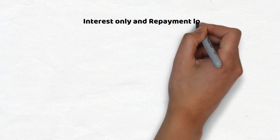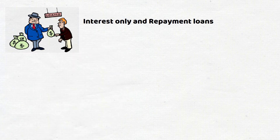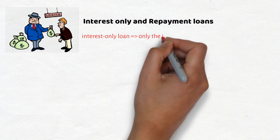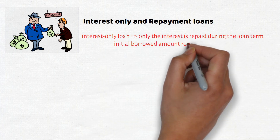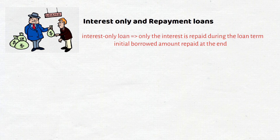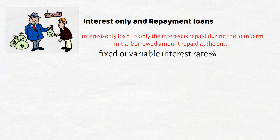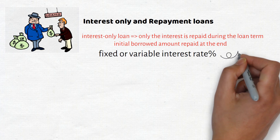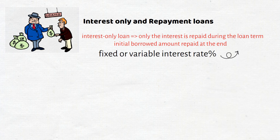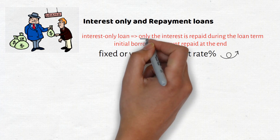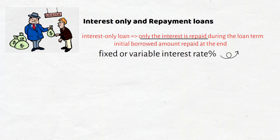An interest only loan is a type of loan where only the interest is repaid during the loan term, with the initial borrowed amount paid at the end. The interest rate on such a loan may be fixed or variable, resulting in uncertain regular payments. With an interest only loan, we are just paying the interest owed on the outstanding amount, and the amount of interest we pay will depend on the interest rate at the time, which we cannot know in advance.